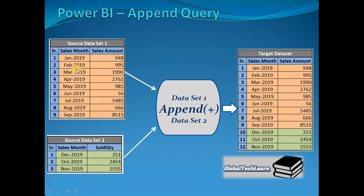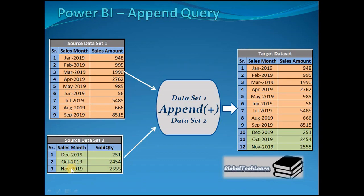As you can see here, we have sales data from January to September for year 2019 maintained in dataset 1, and for November to December 2019 the sales data is maintained in dataset 2. The structure for these two sources is almost similar and they maintain the same kind of data, so instead of maintaining two datasets we want to append these sources and get a single dataset.